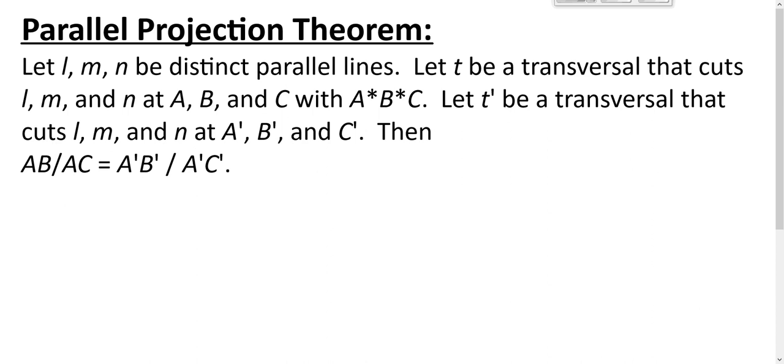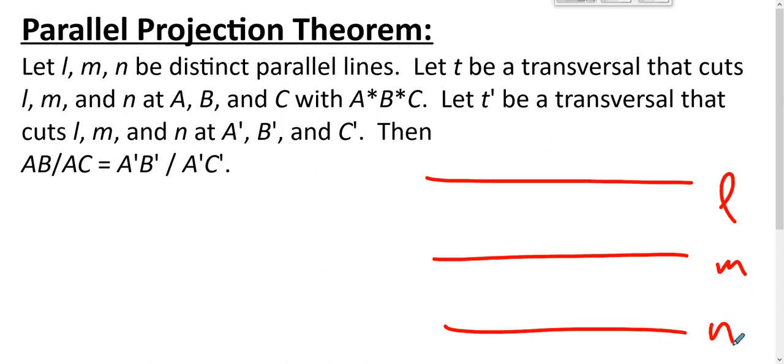And the parallel projection theorem says that if you have L, M, and N, and they are distinct parallel lines, this is where the Euclidean parallel postulate comes into play, because if L and M are parallel and N is also parallel to one of them, it doesn't have to be parallel to the other, unless you're in a Euclidean geometry.